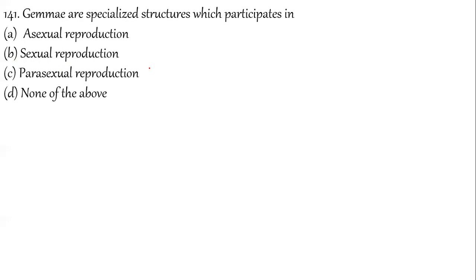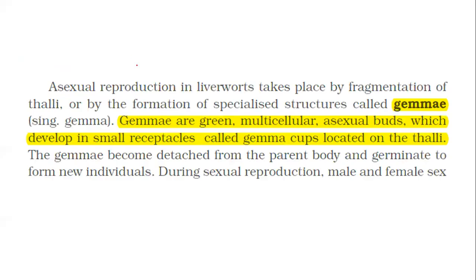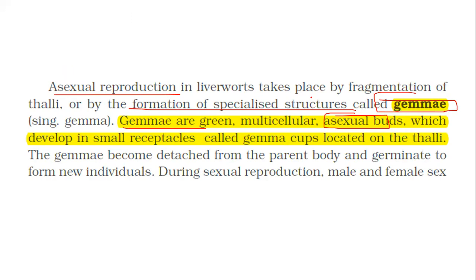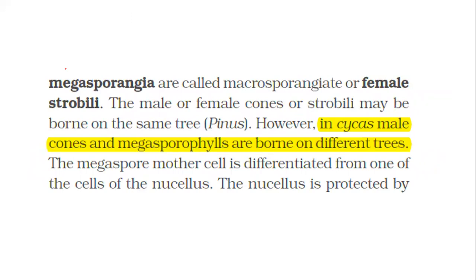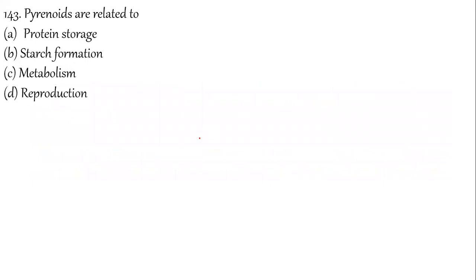Question 141: The diagram of Gemma cups — what type of reproduction is shown? It is asexual reproduction. Gemmae are green multicellular structures. NCERT states: asexual reproduction by the formation of specialized structures called gemmae. Question 142: Cycas is a dioecious plant — male and female cones are borne on different organisms. Therefore they are called dioecious.